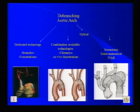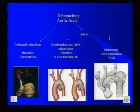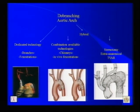The debranching of the aortic arch can be separated into dedicated technology by either branches or fenestrations, which are not commercially available in the United States, or a hybrid combination of technologies that are endovascular but were not designed to work together — like chimneys or in-situ fenestrations — or the combination of open procedures and endovascular approaches.